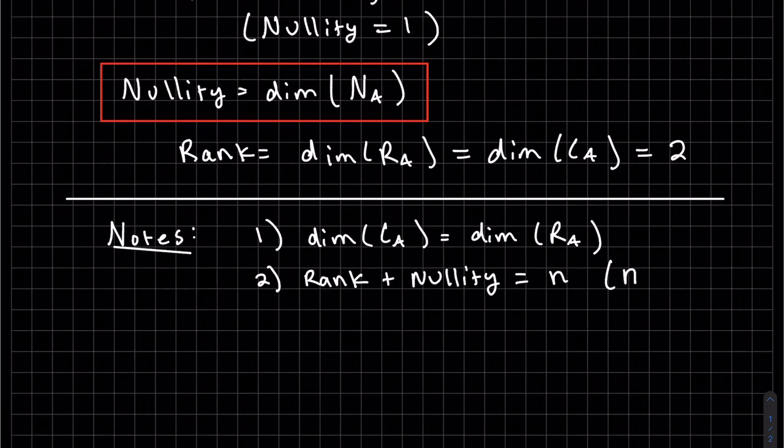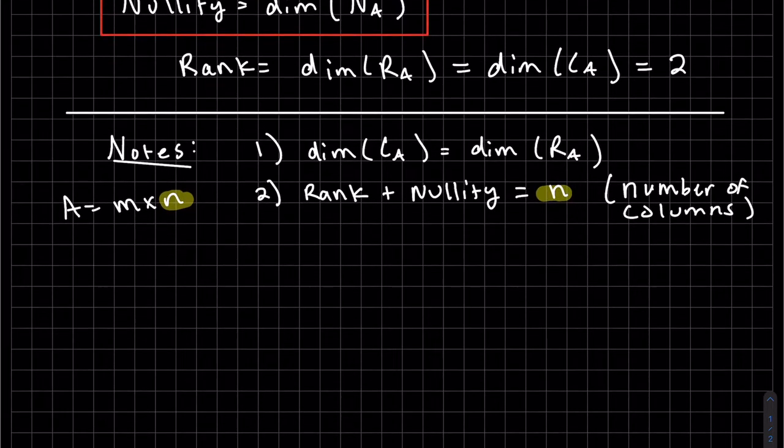And this is our number of columns. Again, our A is an M by N. It is definitely this N that we're talking about. So in the above example,